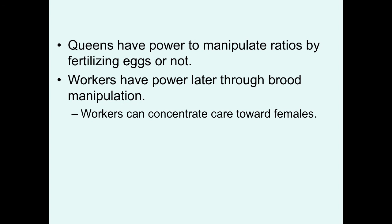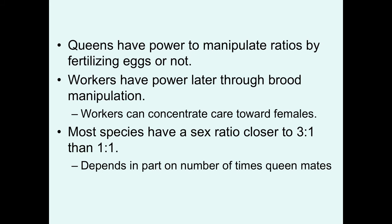Queens want a 50-50 ratio; workers want a three-to-one ratio. Queens have initial power to manipulate sex ratios by fertilizing eggs or not. But workers have the ultimate power through brood manipulation — they are taking care of the young and can concentrate care toward females and let more males die. In most species of Hymenoptera, we see a sex ratio closer to three-to-one than one-to-one, indicating that the workers have the upper hand in this situation.